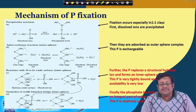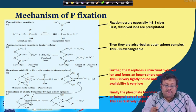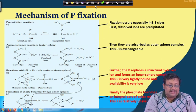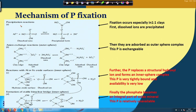One mechanism of phosphorus fixation is precipitation reaction. This fixation occurs especially in 1:1 type clays where dissolved ions are precipitated. Dissolved aluminium reacts with the phosphate group and ultimately protons are formed and the chemical gets precipitated — this is one way of phosphorus fixation.